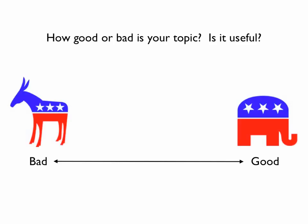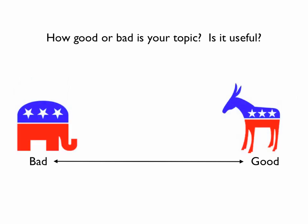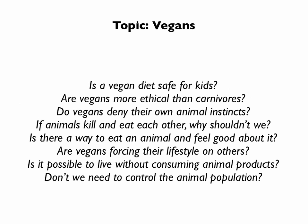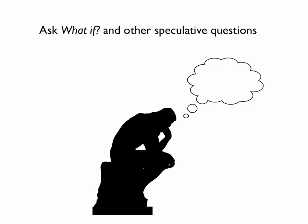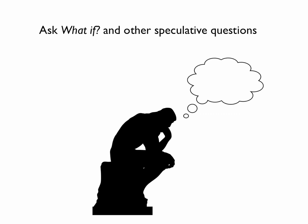Next, think about evaluating your topic — how good or bad is it? Is it useful? Come up with evaluative questions about your topic: what do you like about it, and more importantly, what do you not like about it, or what might others not like about it? Finally, ask some speculative what-if questions. This is where you do some out-of-the-box thinking and come up with wild and creative ideas surrounding your topic. This is often where you find the most original thinking. Come up with as many what-if questions as you can.